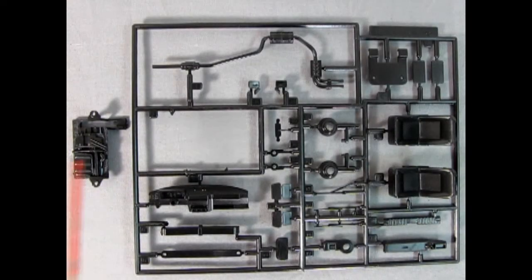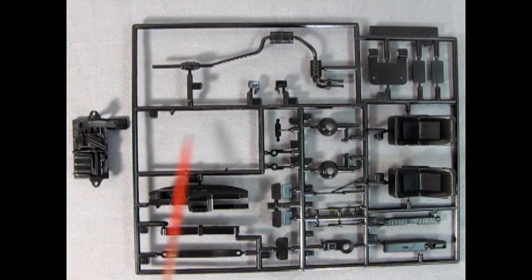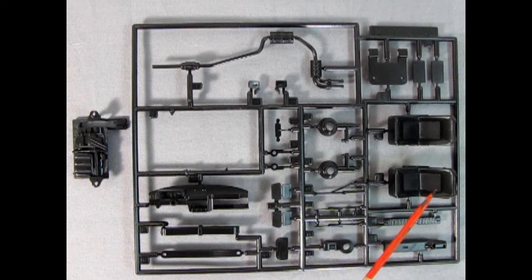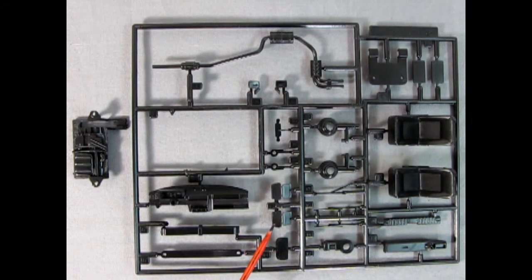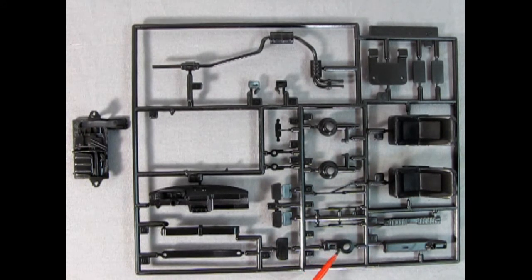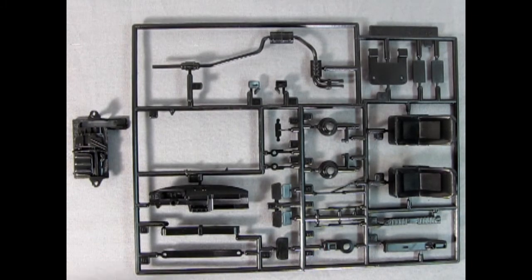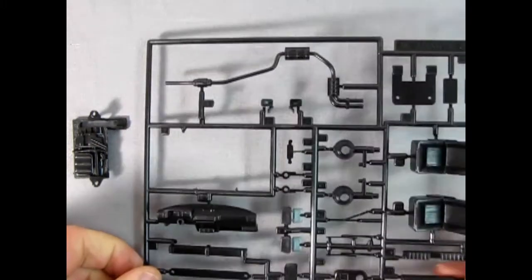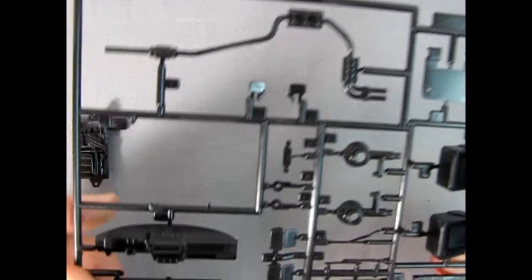On our next parts tree we have the bottom of the engine which was in this square here. There's our dashboard as well as our bucket seats and the backs of the seats, the headrests. There's the hinges for our rear seat which has this little panel here. Our center console. There's the lever for our switch and our exhaust system is also on here with our side mirrors.